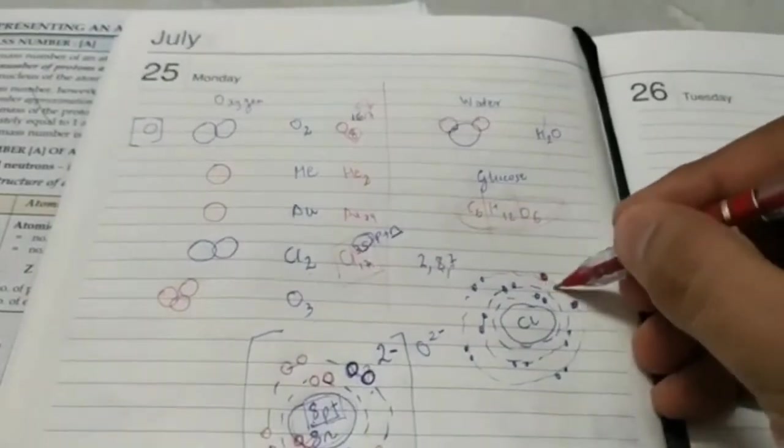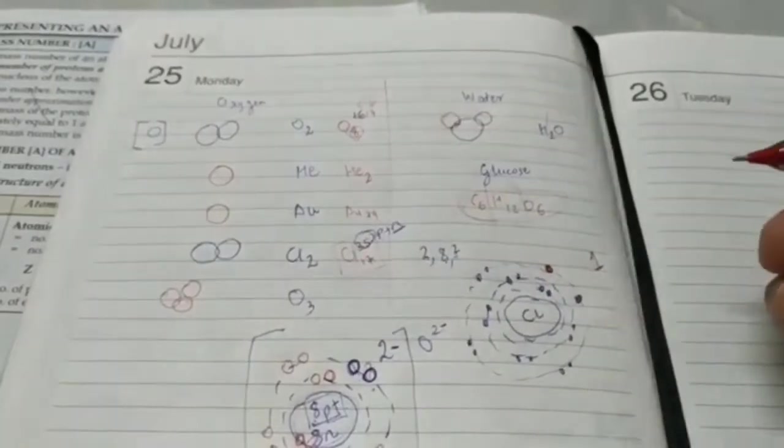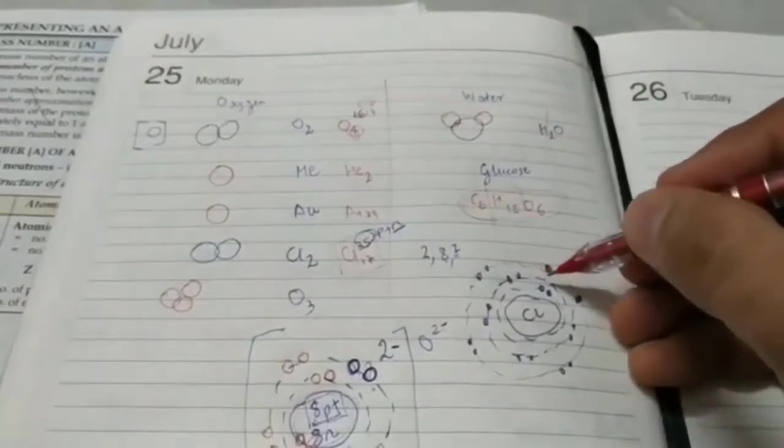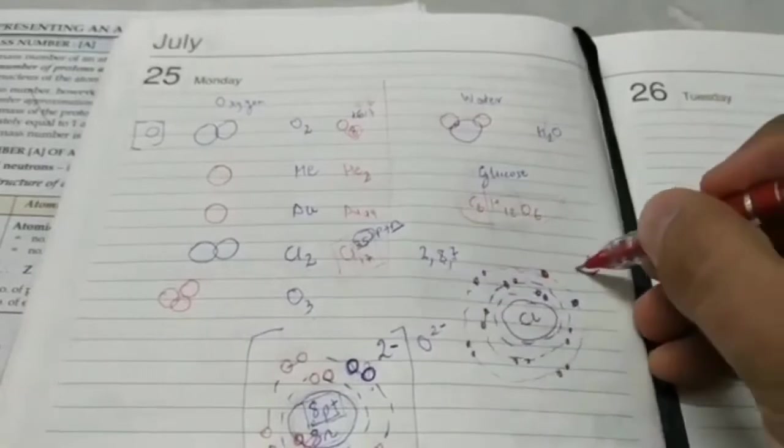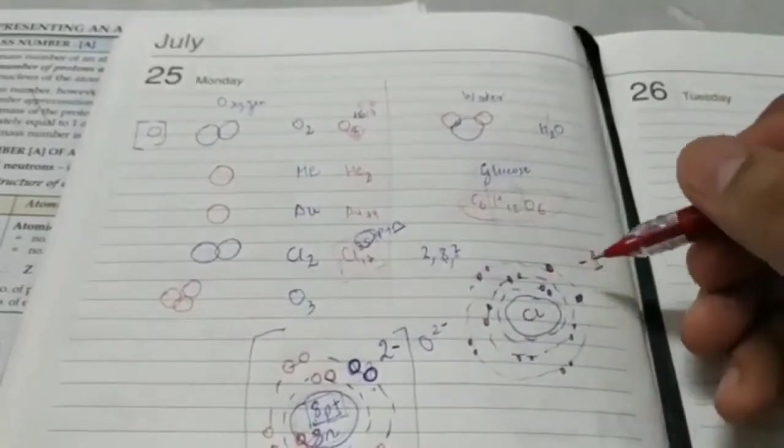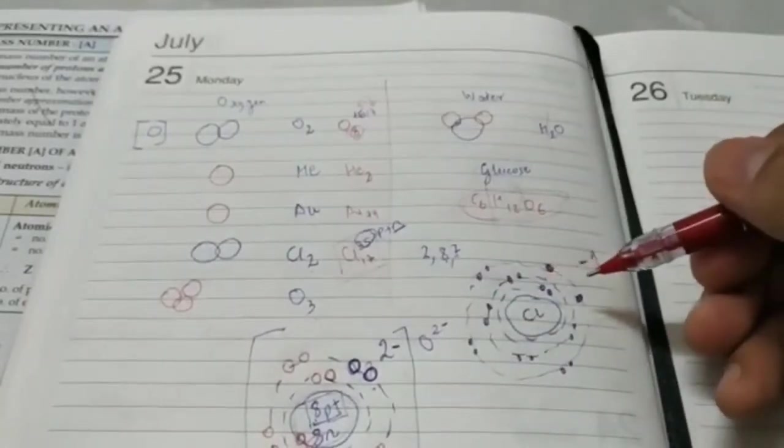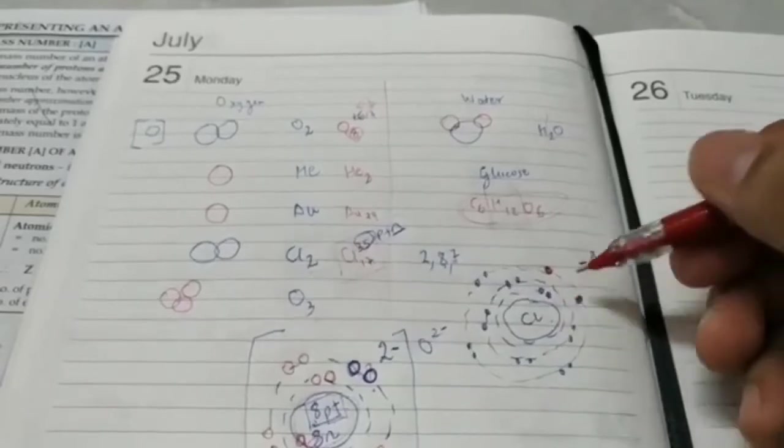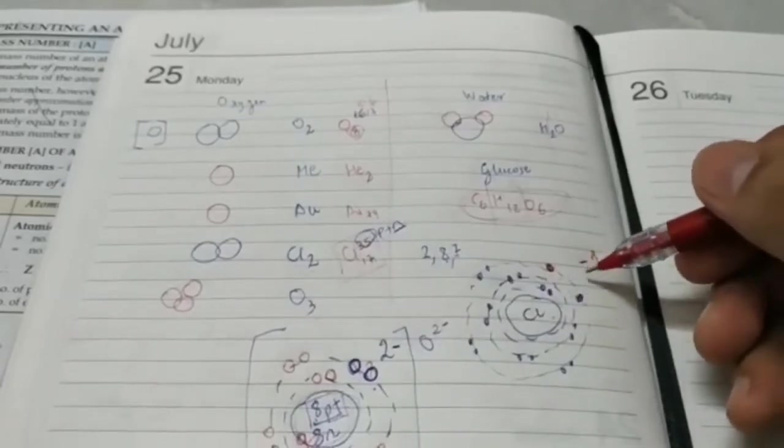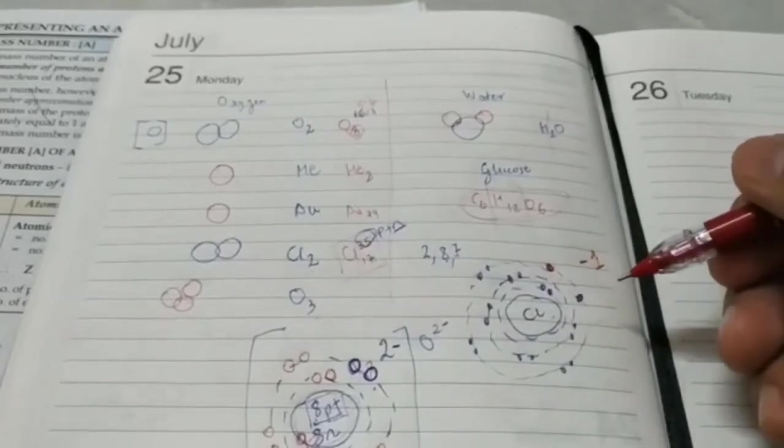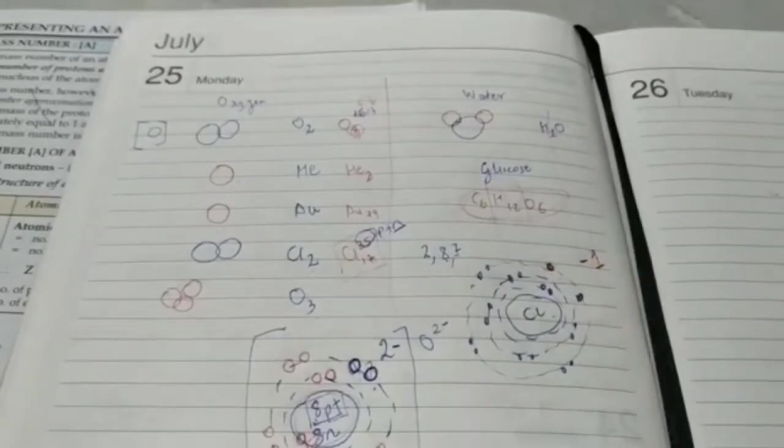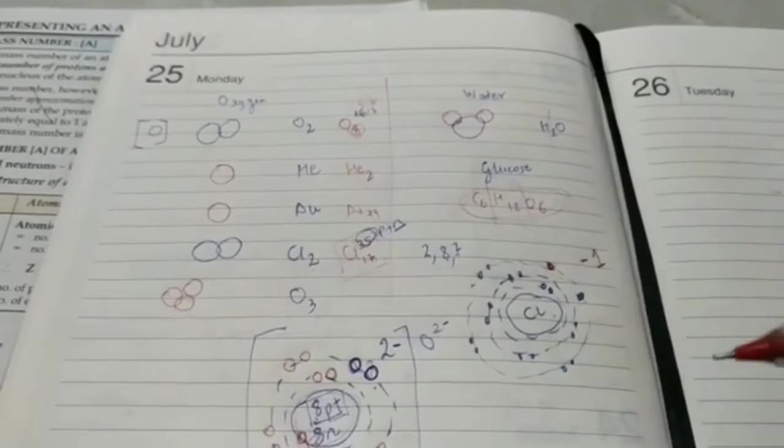In fact, after it gains, it will be charged. Its electrovalency is minus 1 because it will gain a negative charge. Non-metals always are electronegative. Their valencies, electrovalencies are negative. Whereas metals, they are electropositive. They always lose electrons. Non-metals gain electrons. Metals lose electrons.